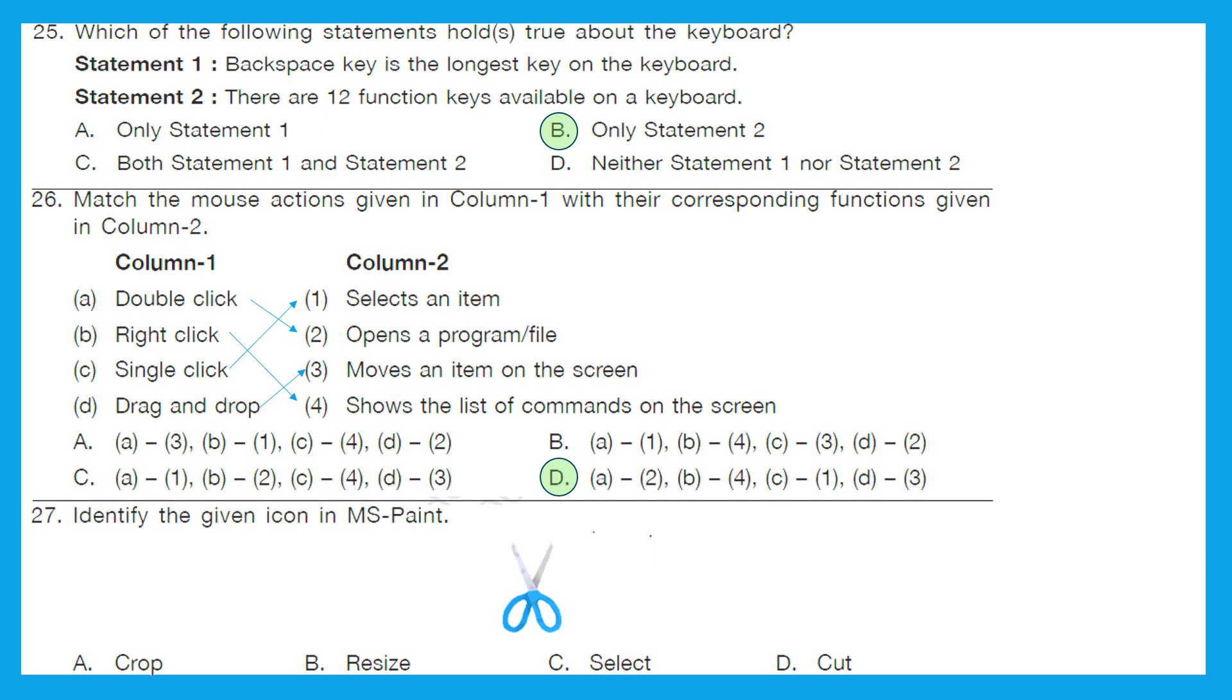Question 27: Identify the given icon in MS Paint. It's very easy. What does a scissor do? It cuts. Option D is the right answer. Cut.